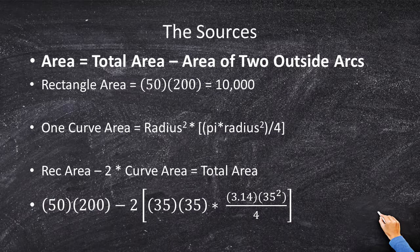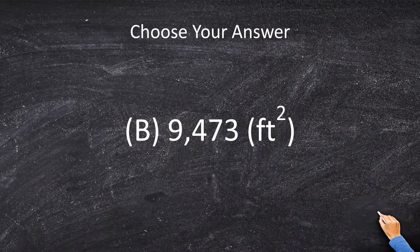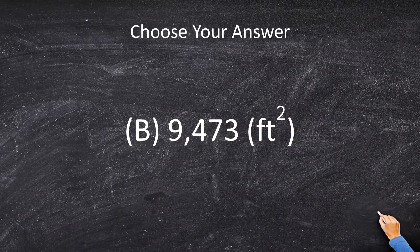So 50 times 200, 10,000 minus our area of the circle twice. Our answer is going to be B, 9,473 square feet.